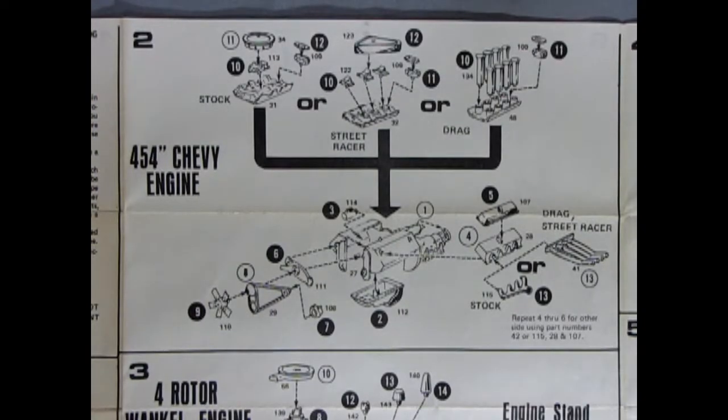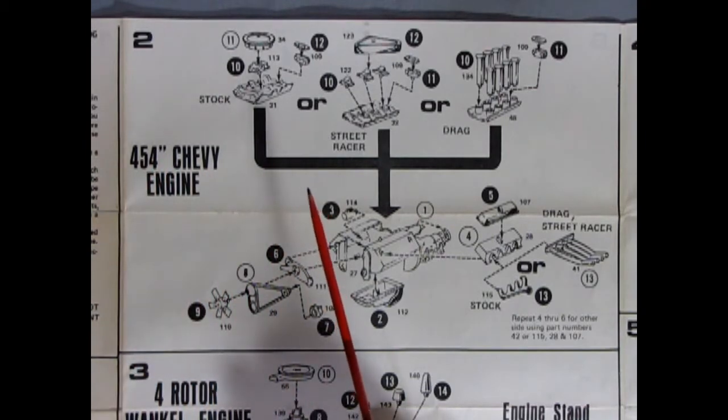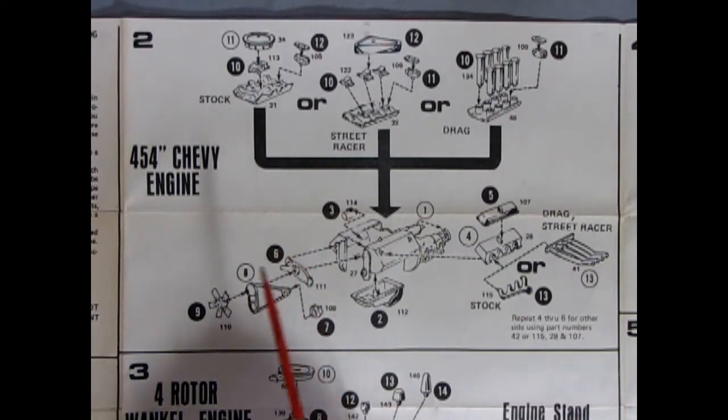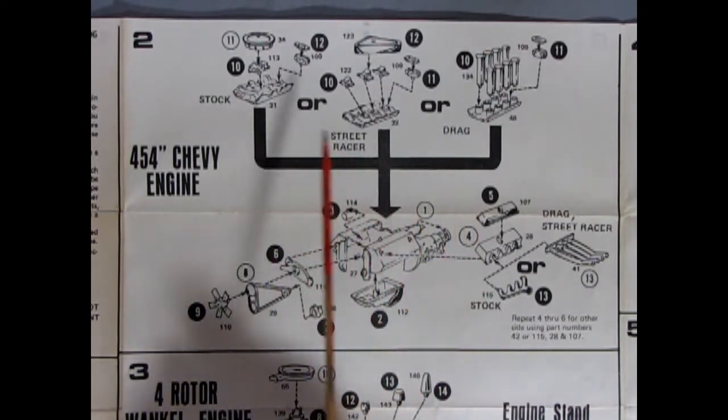Now here's what really gives this thing away as being a 1974 or one of the things is the 454 Chevy engine which of course was dropped in 1975 for the more fuel efficient economical 350 cubic inch engine because in 1975 they were getting into that whole gas crunch thing.